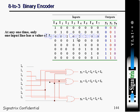At any one time, only one input line has a value of 1. After that, they are implementing the schematic diagram for the 8-to-3 binary encoder, showing how each output is derived. In this way you have to implement the schematic diagram for the 8-to-3 binary encoder.